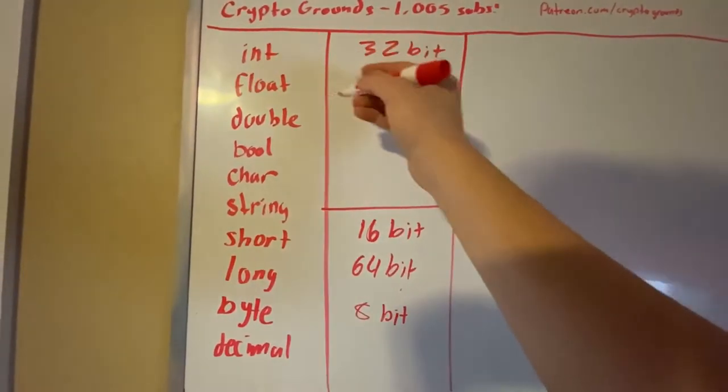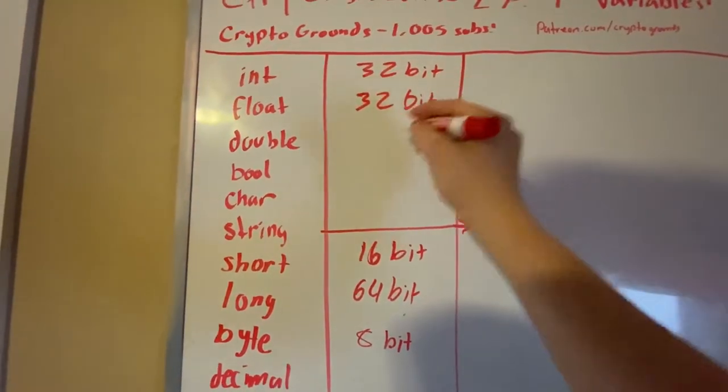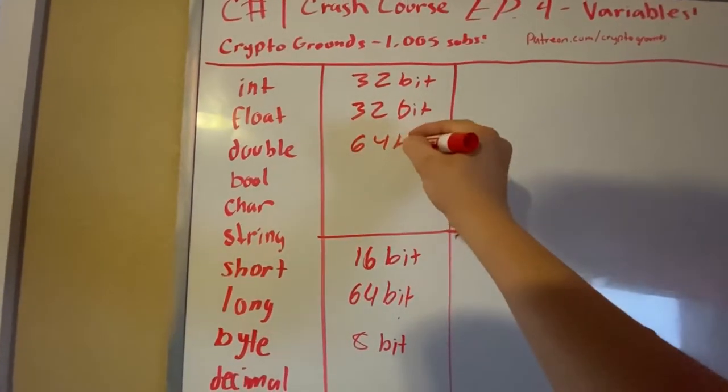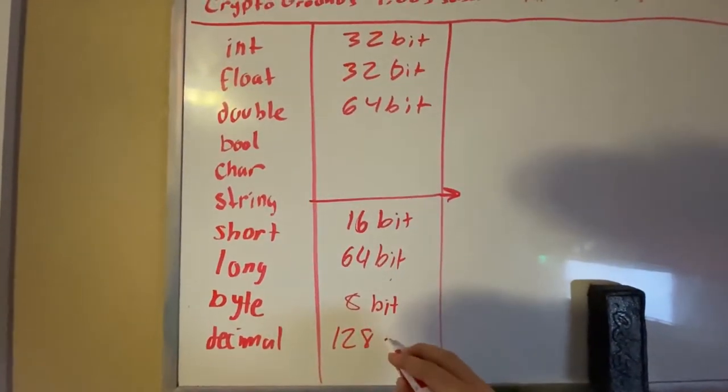I'm going to show you that right now. So float is 32-bit, double is 64-bit, while decimal is 128-bit.